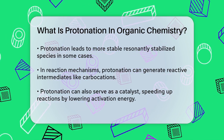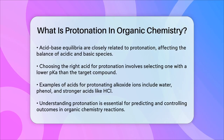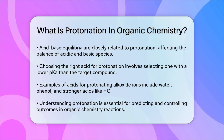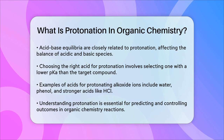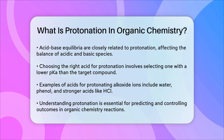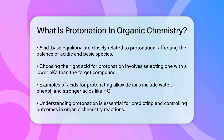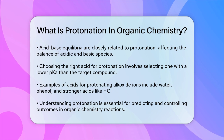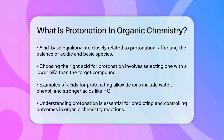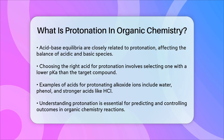To choose an acid for protonating a given compound, you need to select an acid that produces a weaker acid and a base after the reaction. This means looking for an acid with a lower pKa value than the compound you're protonating. For example, to protonate an alkoxide ion, you could use water, phenol, or even stronger acids like HCl. In summary, protonation in organic chemistry involves adding a proton to specific functional groups, influencing the molecule's properties and reactivity. It plays a vital role in various reaction mechanisms and can even act as a catalyst to speed up chemical reactions.